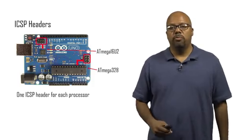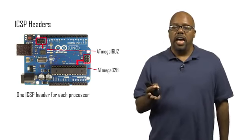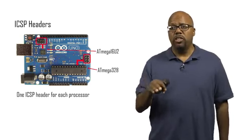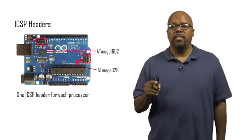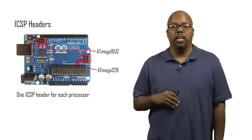So if you look at the board, it's got two ICSP ports, because there are two processors, right? There's the Atmega328, which is the main one, but there's also the Atmega16U2, which is for the USB communication. And that also has firmware on it, has code running on it.